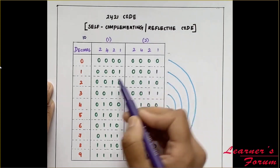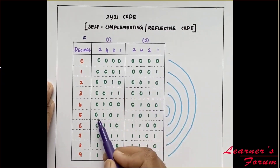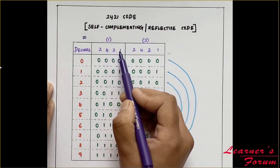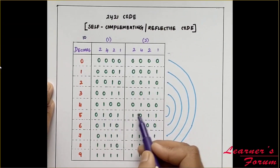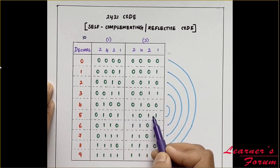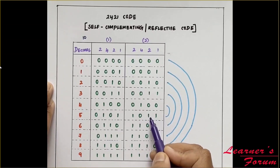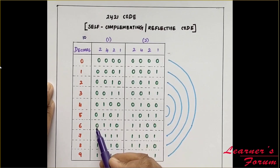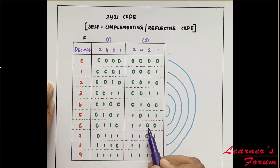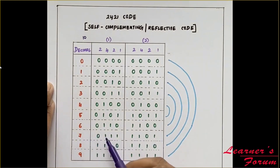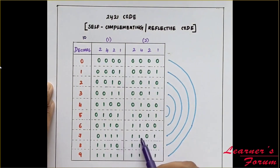Till the fourth value, both representations in technique 1 and 2 remain the same for 2421 code. But starting from the fifth decimal value, for 5 in 2421, we can represent it as 4 plus 1, giving 0101. In the other way, we can represent it as 2 plus 2 plus 1, which is also equivalent to 5. Similarly for 6, we can take it as 4 plus 2, giving 0110, or in the other way as 1100. For 7, it is 0111 in the first representation and 1101 in the second.